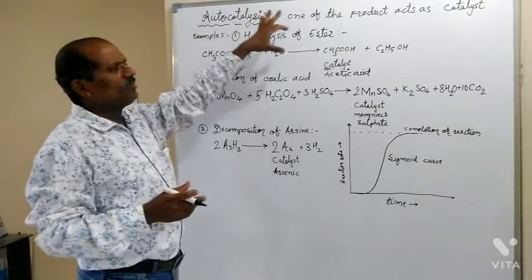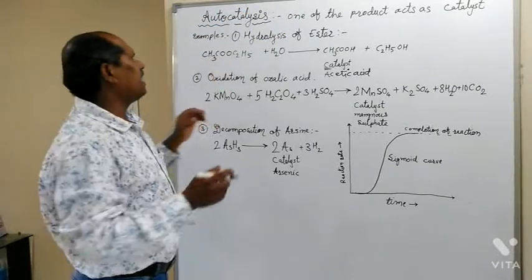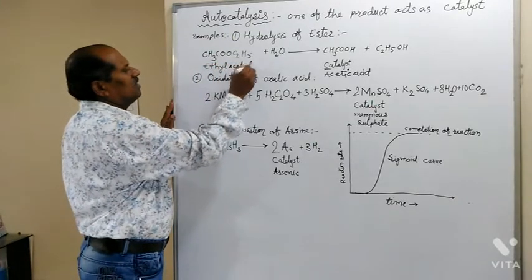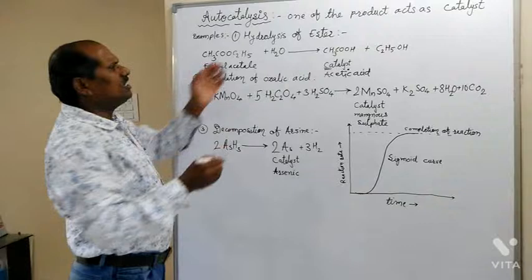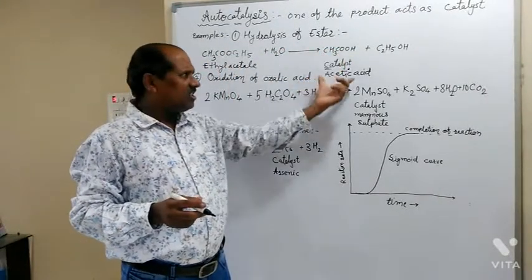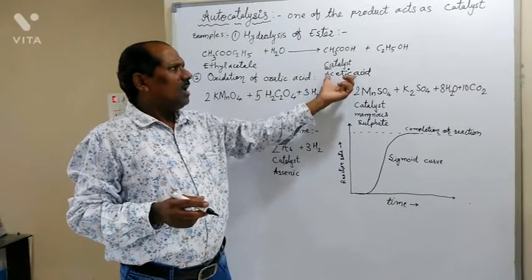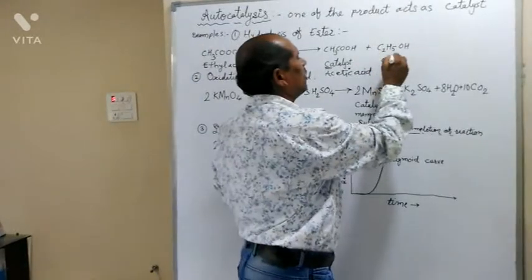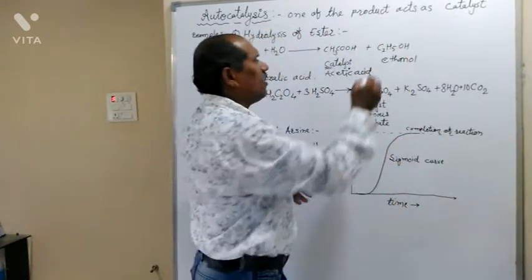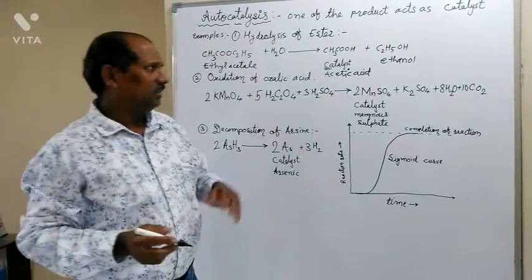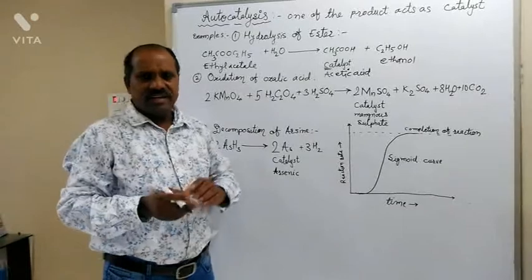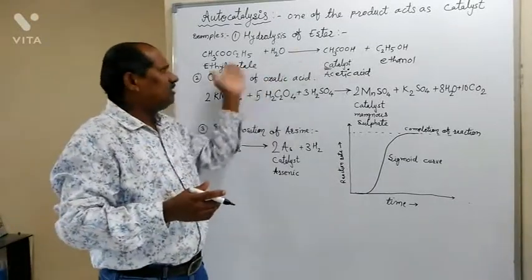For example, hydrolysis of ester — this is ethyl acetate. Ethyl acetate upon hydrolysis gives CH3COOH, that is acetic acid, and ethanol. These are the products which are formed during the course of reaction. Amongst these products, acetic acid itself acts as a catalyst for the given reaction.